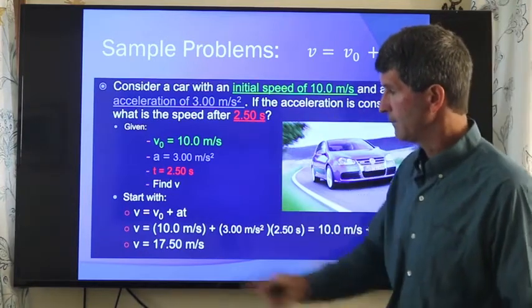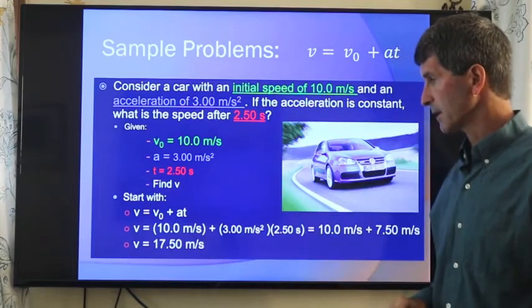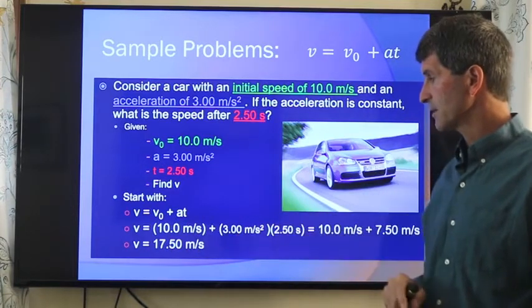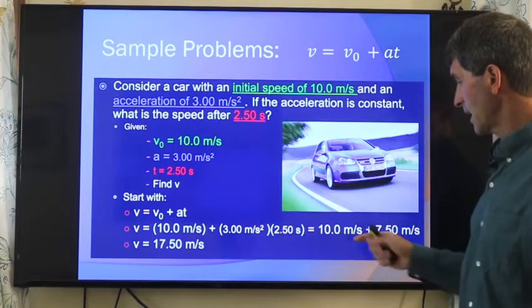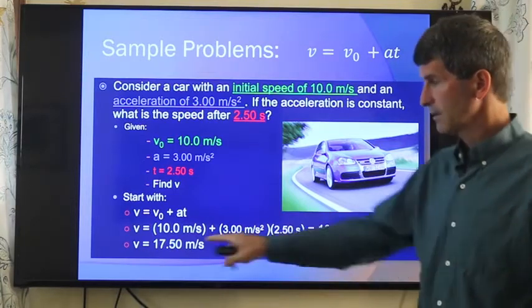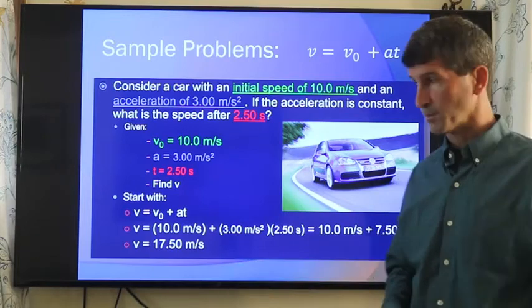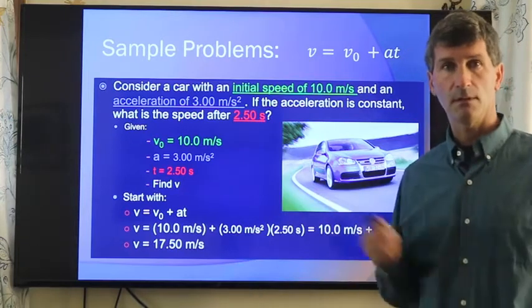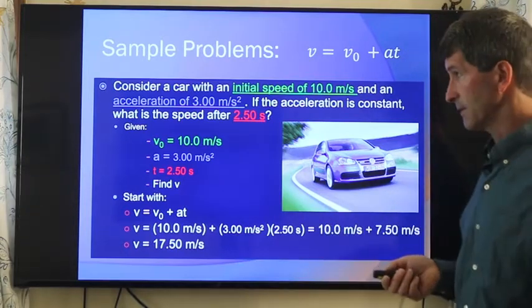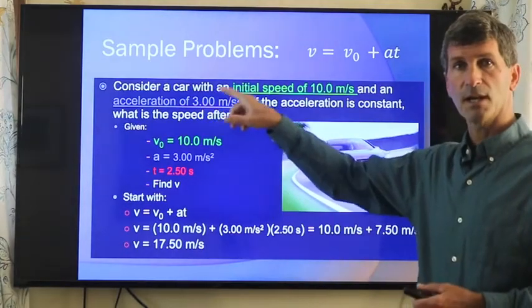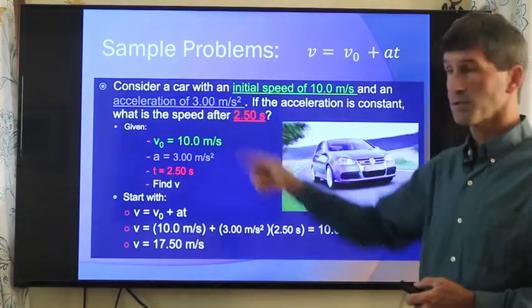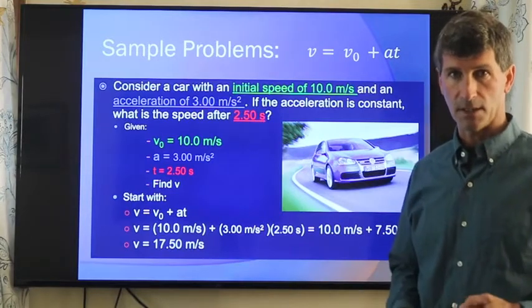So I plug in, and initially I'm going 10 meters per second. Acceleration, 3 meters per second squared. Time, 2.5 seconds. 10 plus 7.5 gives me 17.5 meters per second. So that's a real easy, straightforward application of this. This only works because the acceleration is constant. If the acceleration were not constant, we can't use these kinematic equations.